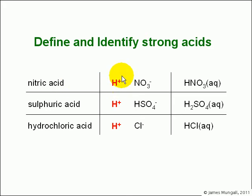So we can have nitric acid, which is made up of H plus ions and NO3 minus ions, sulfuric acid with H plus ions and HSO4 minus ions, hydrochloric acid with H plus and Cl minus ions. So we write them as HNO3, H2SO4, HCl, but they are fully dissociated into these ions in solution.